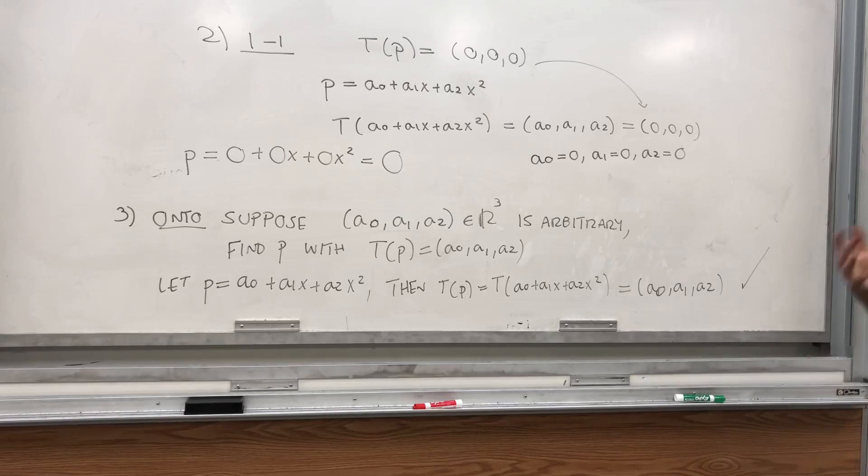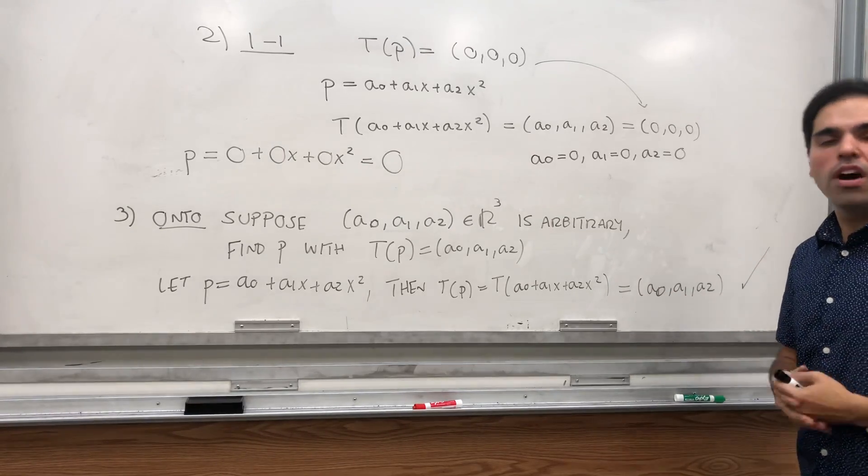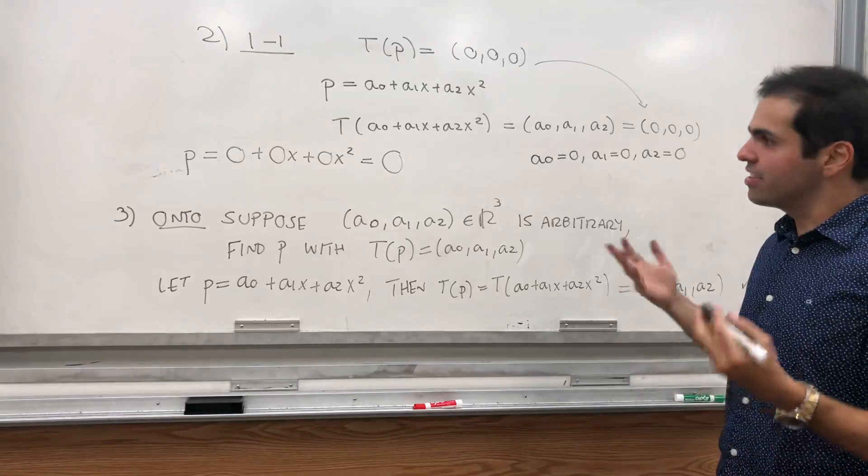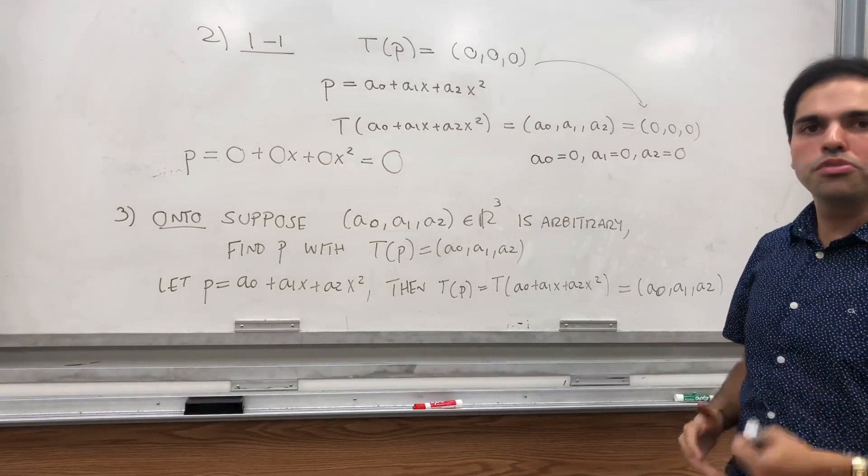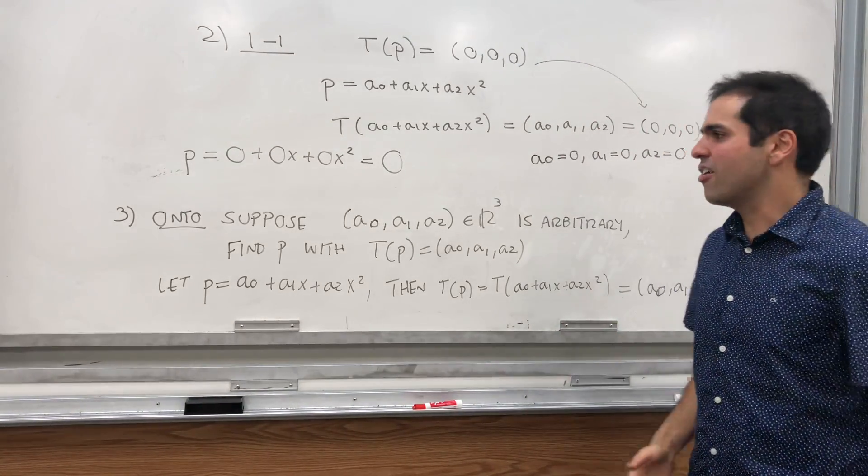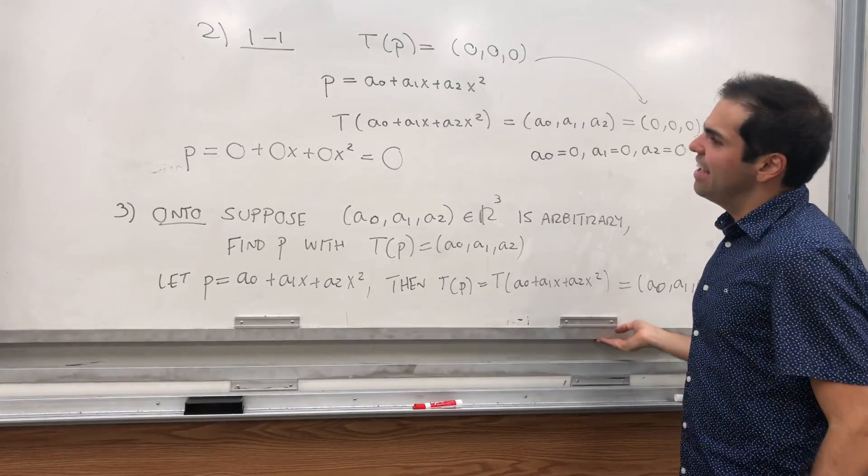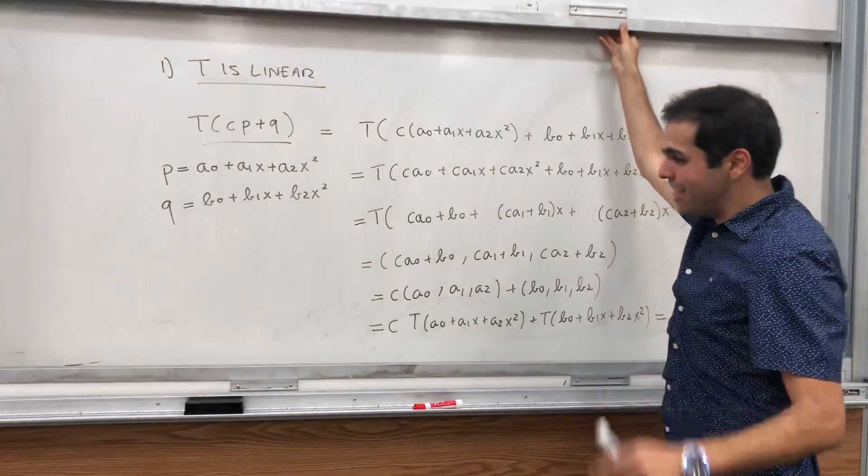Therefore, we have found an explicit one-to-one and onto function that's linear between those two spaces. Therefore, they are isomorphic. And let me just mention two more methods.